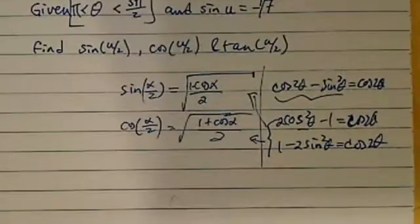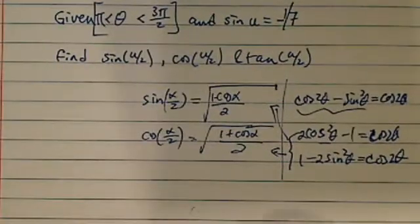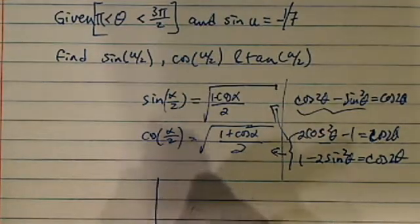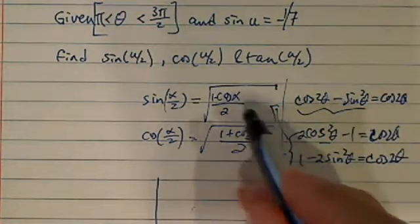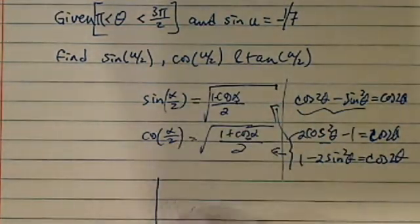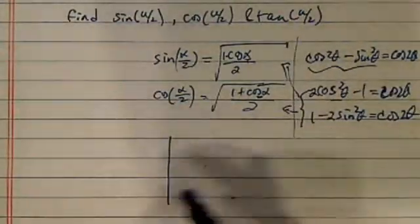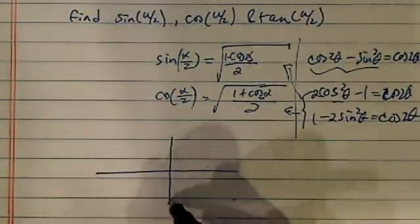So let's suppose you have access to those formulas. The next thing we need to do is find cosine u, since we're trying to find half of the angle. We need to figure out where the angle is.